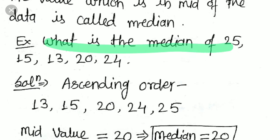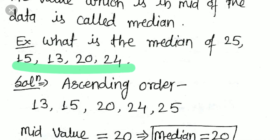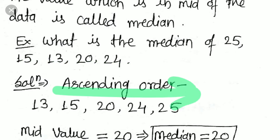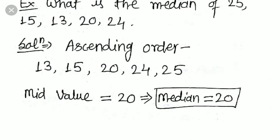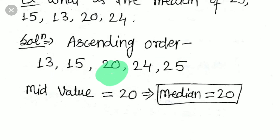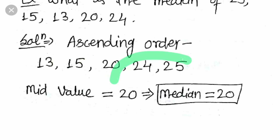For example: what is the median of 25, 15, 13, 20, and 24? First, arrange in ascending order: 13, 15, 20, 24, 25. The value in the middle is 20, since the number of terms before it and after it are equal. So the median is 20.